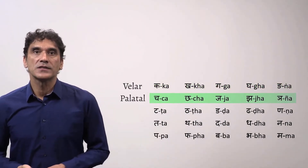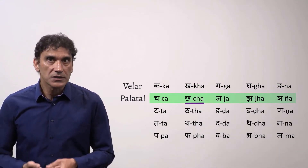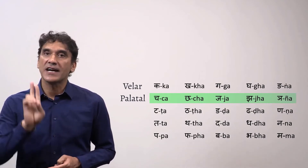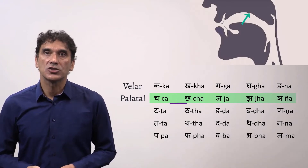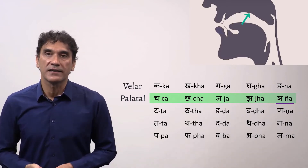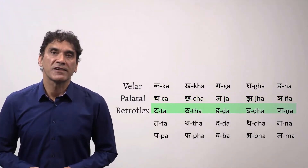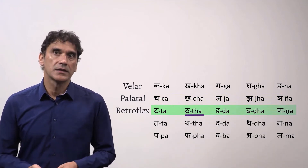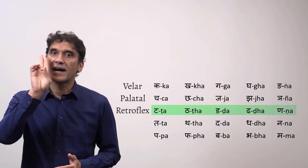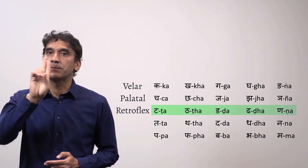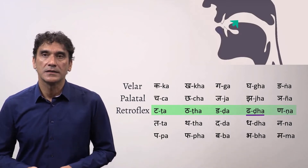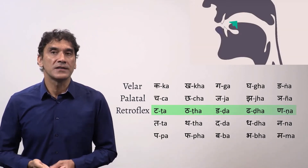The second row is the palatal sounds. The front part of the tongue touches the hard palate. The third row is the retroflex sounds. The tongue curls back and its tip touches the hard palate.